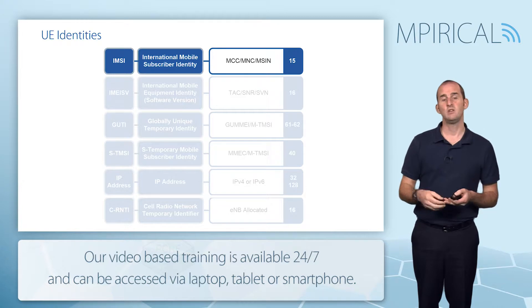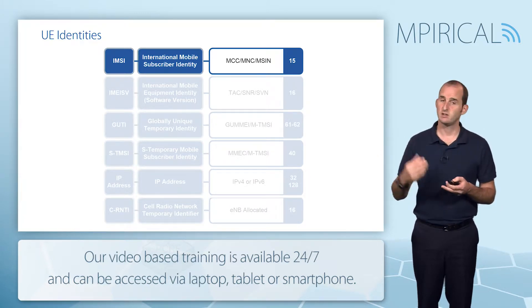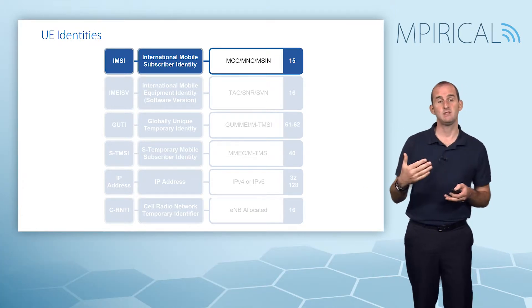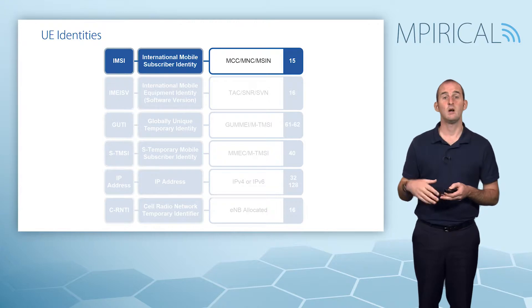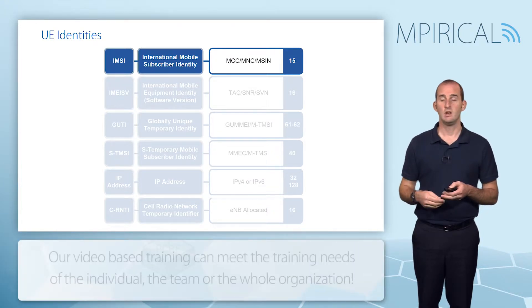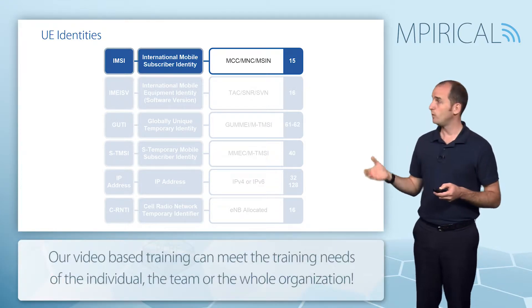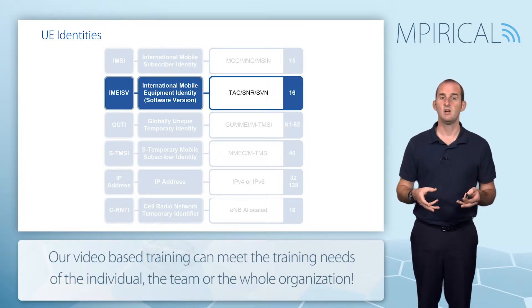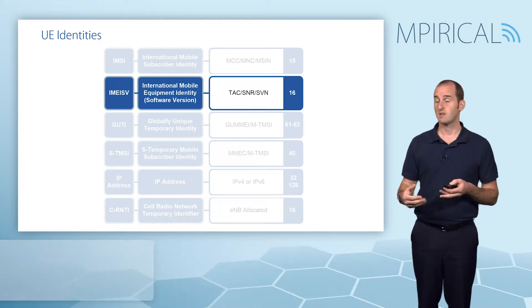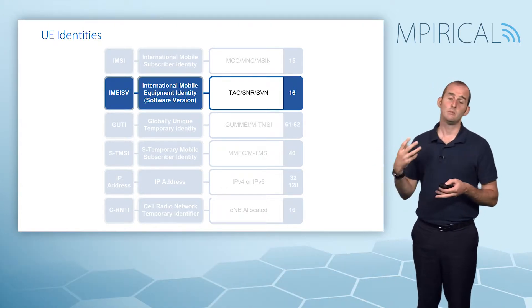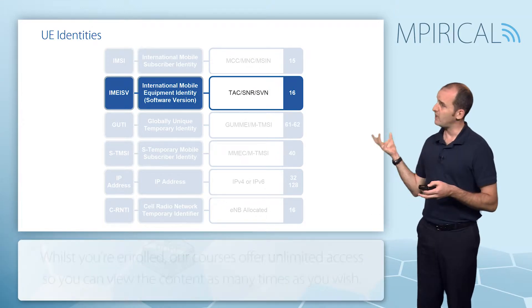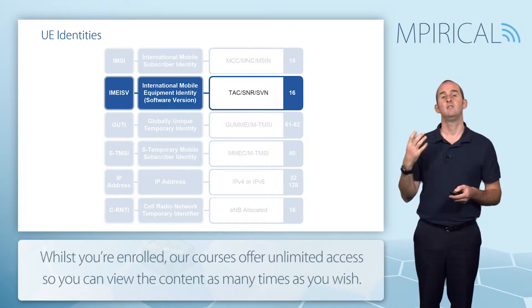On occasion the network will not know the IMSI of the device trying to access the network, so there will be times when you actually see the IMSI being supplied to the network by the mobile. We also have the IMEISV, which is also used in 2G and 3G. The IMEISV is how we identify the mobile equipment on a unique basis, and the SV element stands for software version.